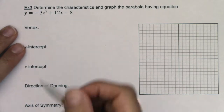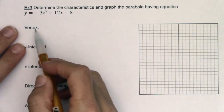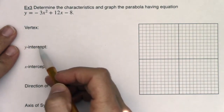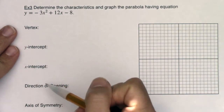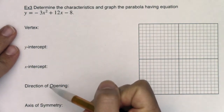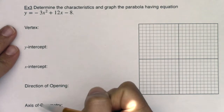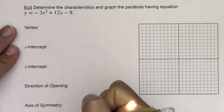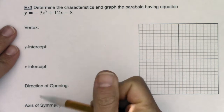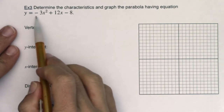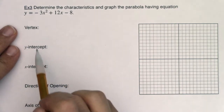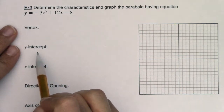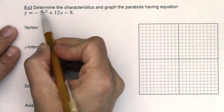I'm being asked to find the vertex, y-intercept, x-intercept, direction of opening, axis of symmetry, and where this parabola increases and decreases. All I have right now is this little equation.